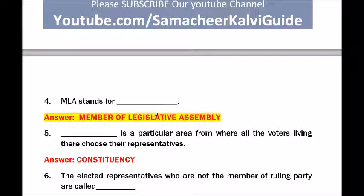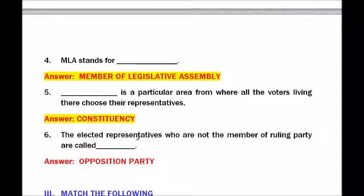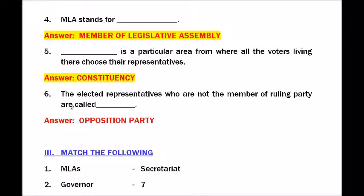Question five — dash is a particular area from where all the voters living there choose their representative. Answer: constituency. Question six — the elected representatives who are not members of the ruling party are called dash. Answer: opposition party.